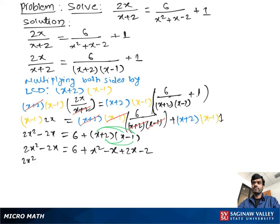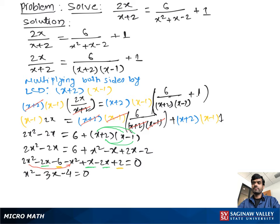We bring all the terms to the left-hand side from the right-hand side. We can write 2x squared minus 2x minus 6 minus x squared plus x minus 2x plus 2 is equal to 0. Simplifying: 2x squared minus x squared gives x squared; minus 2x plus x minus 2x gives negative 3x; minus 6 plus 2 gives negative 4, equal to 0.